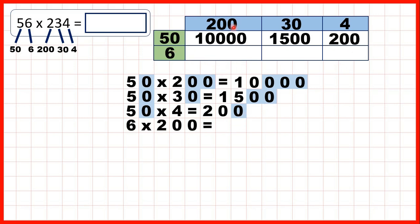Here we have 6 times 200, which is 1,200 because 6 times 2 is 12, and then we need two end zeros.